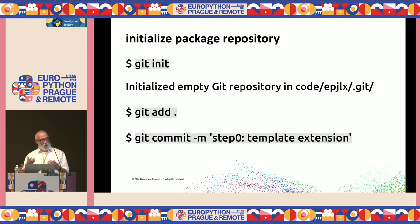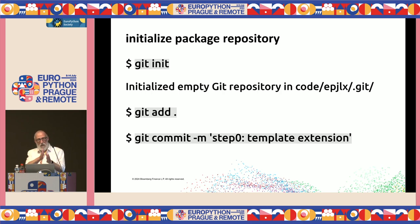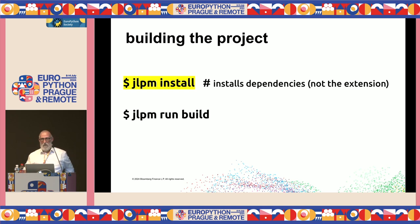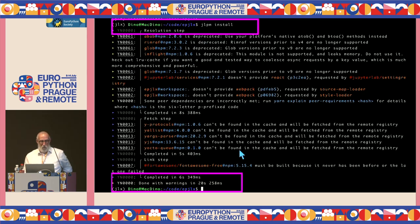At this point you can create a Git repository. Each step of the tutorial corresponds to a commit, so the commit diffs show the code changes. Now we need to build the project. The first time, you install all dependencies with jlpm install — this installs the development dependencies, not the extension itself. You'll see warning messages scrolling by, but it completes in about 20 seconds.